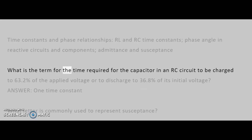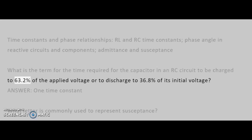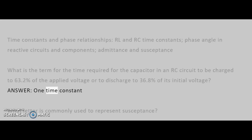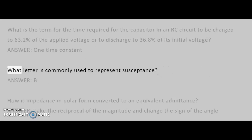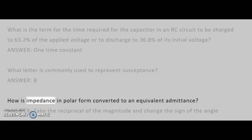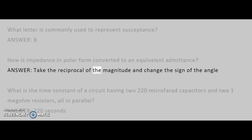What is the term for the time required for the capacitor in an RC circuit to be charged to 63.2% of the applied voltage, or to discharge to 36.8% of its initial voltage? Answer: One time constant. What letter is commonly used to represent susceptance? Answer: B. How is impedance in polar form converted to an equivalent admittance? Answer: Take the reciprocal of the magnitude and change the sign of the angle.